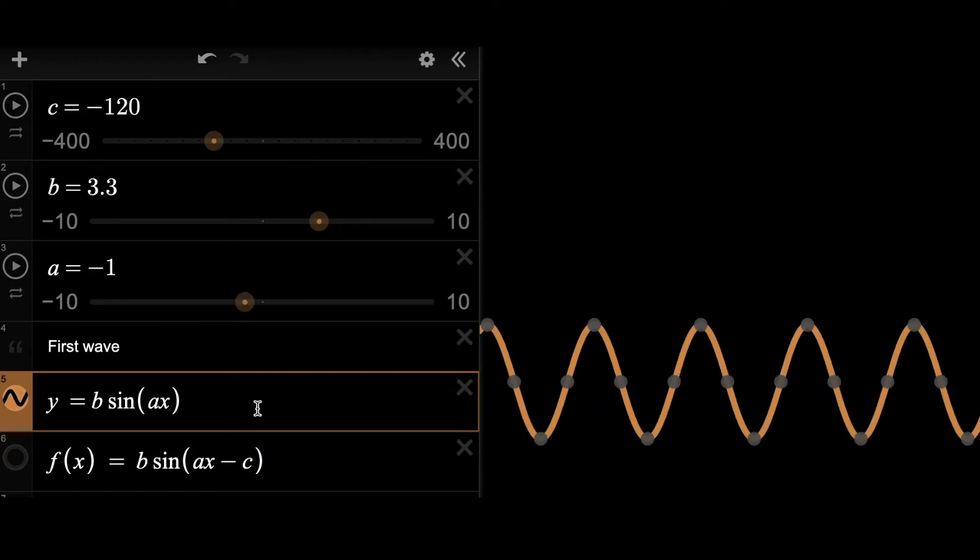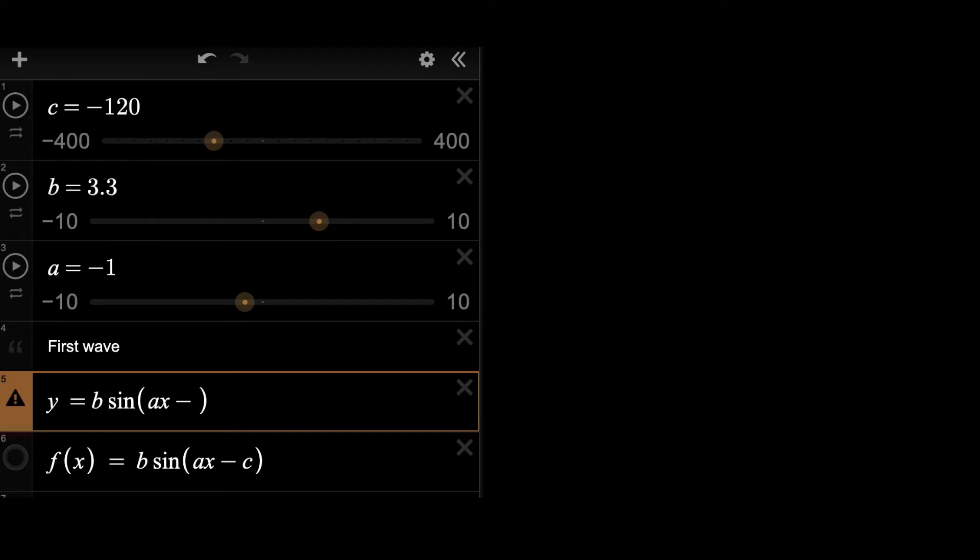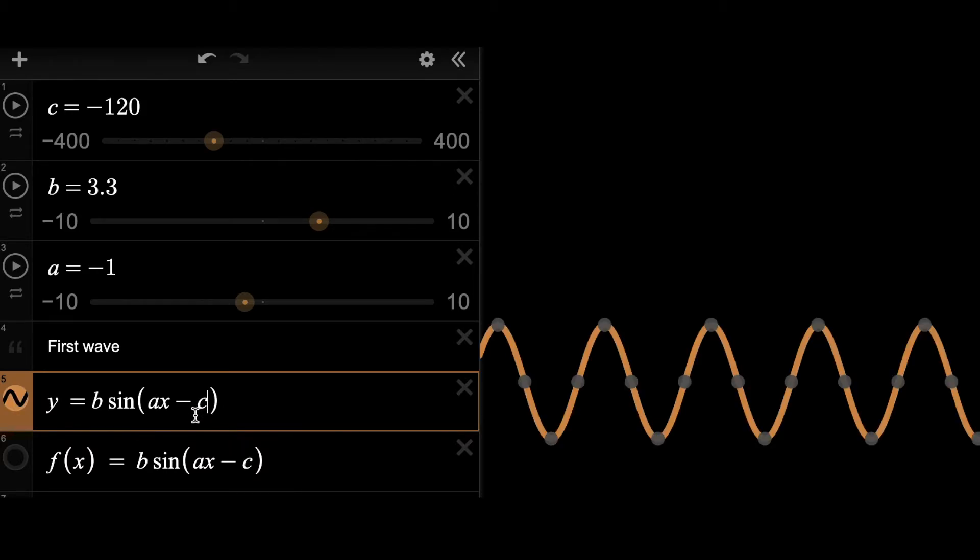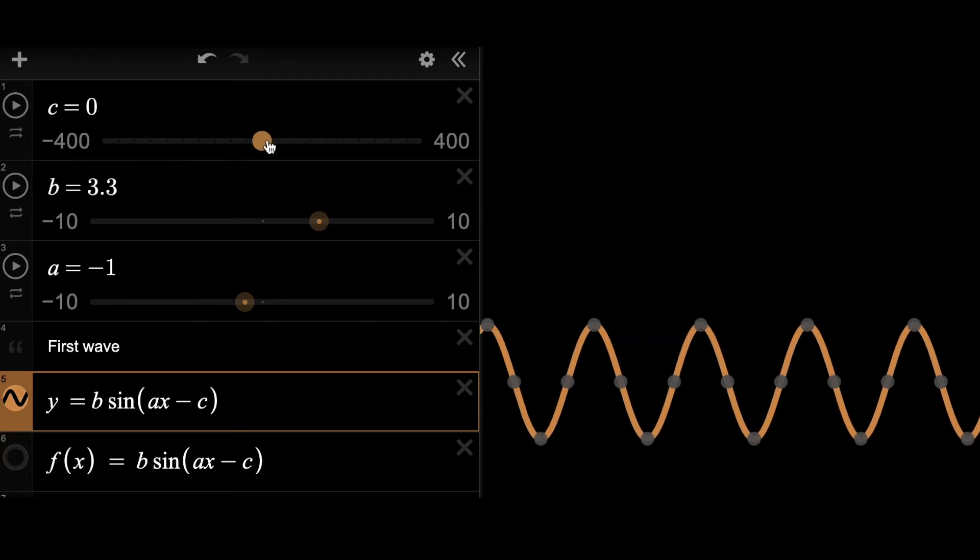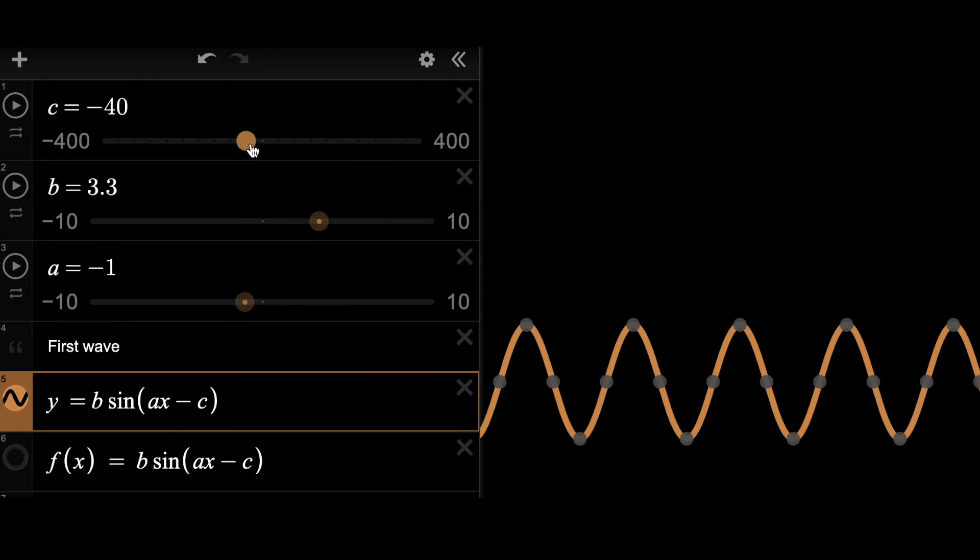For the animation part of the wave, I use the idea of linear transformation, meaning that I want to move the function to the left or to the right by adding negative c inside the parentheses. And then I can adjust the value of c from negative to positive value. So then the function will move to the left or to the right according to the value of c.